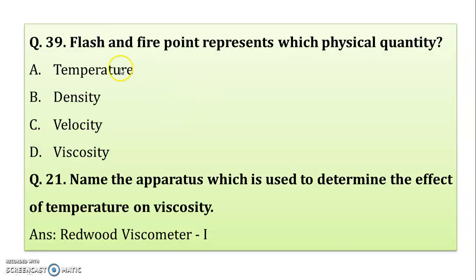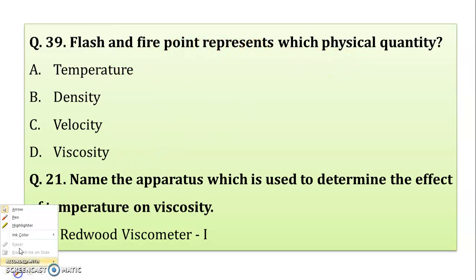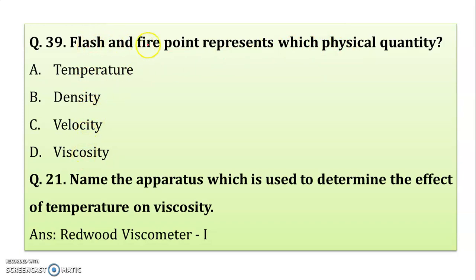Flash and fire point represent which physical entity — temperature, density, velocity, or viscosity? Flash point and fire point represent temperature as a physical quantity. Correct answer: temperature.